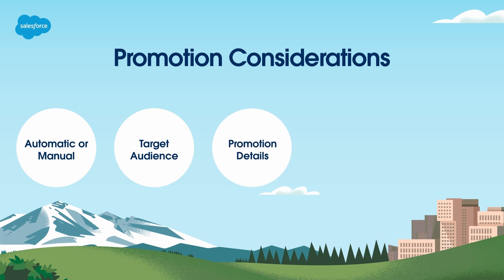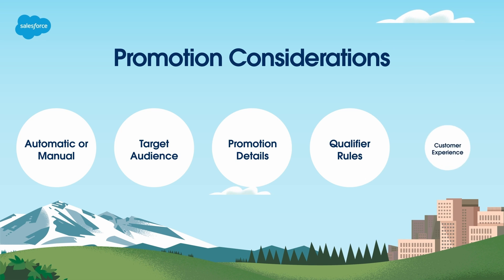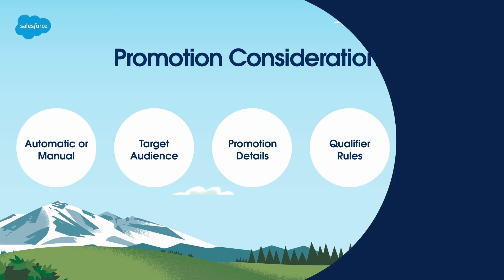Clearly define what the customer will receive — specify which products to target and the amount to deduct from the price. Determine what a customer must purchase to qualify for the promotion; use promotion tiers and qualifier rules to set quantity or price minimums. Tailor the appearance of your promotion to customers by customizing your cart page and other details with Experience Builder. For B2B stores created with the Aura template, configure your checkout to include promotions.